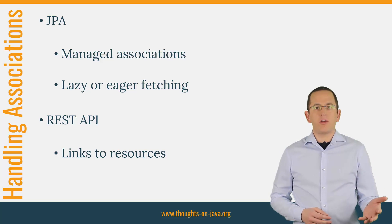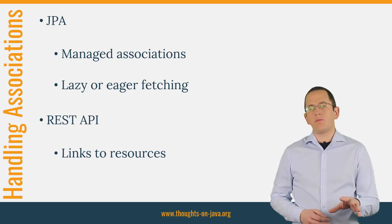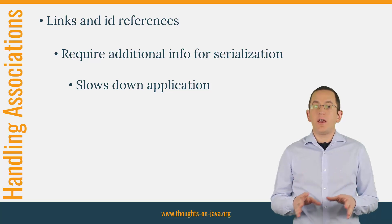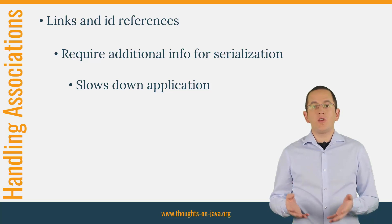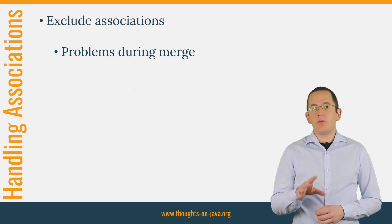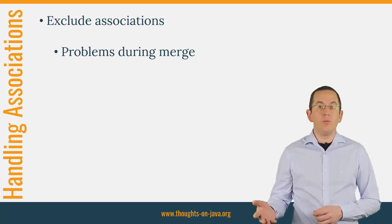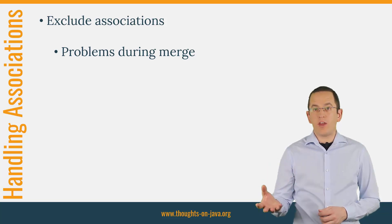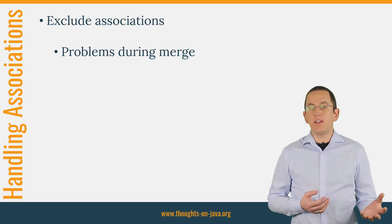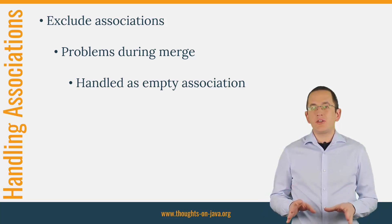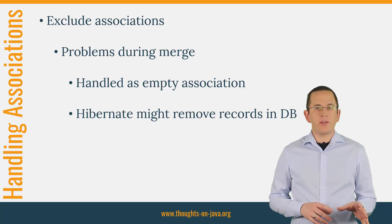But most teams decide to either not model the association at all or to only include ID references. Links and ID references provide a similar challenge. When you serialize your entity to a JSON document, you need to fetch the associated entity and create references for each of them. And during deserialization, you need to take the references and fetch entities for them. Depending on the number of required queries, this might slow down your application. That's why teams often exclude associations during serialization and deserialization. That might be OK for your client application, but it creates problems if you try to merge the entity that you created by deserializing a JSON object. Hibernate expects that managed associations either reference other entity objects or dynamically create proxy objects or a Hibernate-specific list or set implementation. But if you deserialize a JSON object and ignore the managed associations on your entity, the associations get set to NULL. You then either need to set them manually or Hibernate will delete the association from your database.